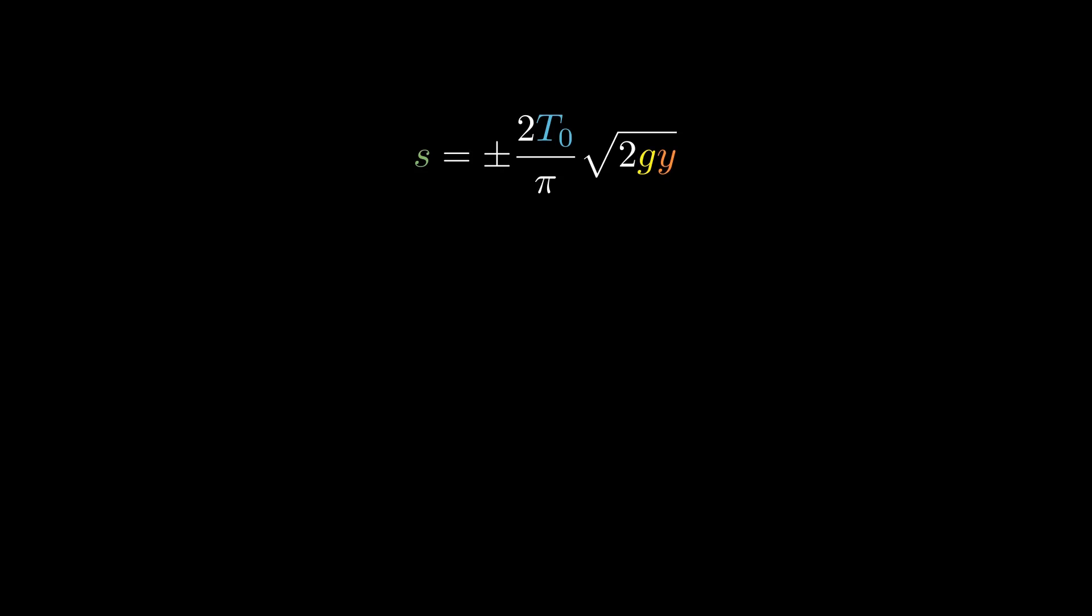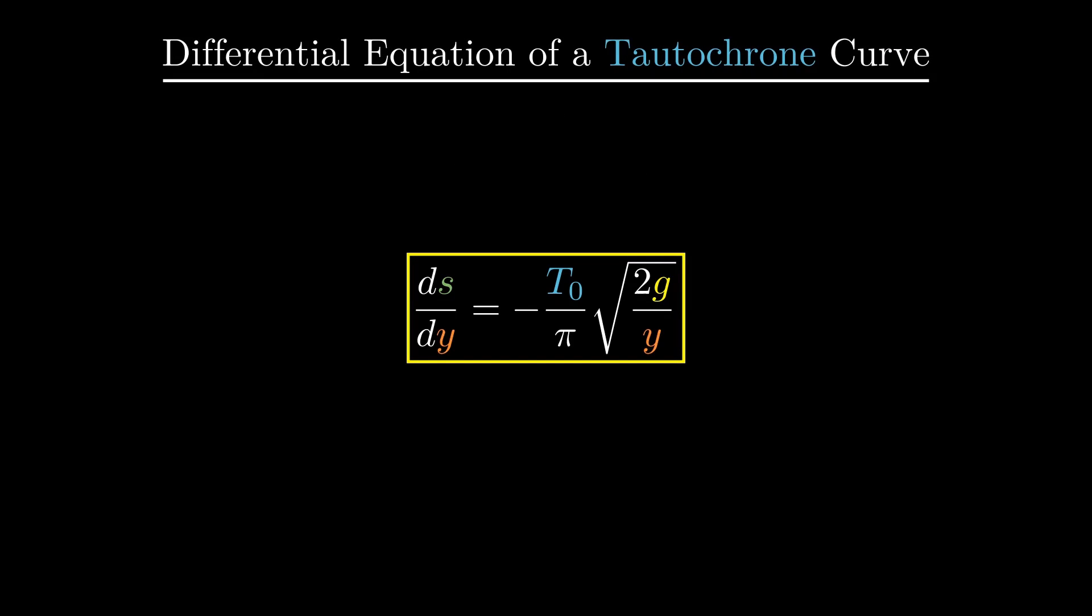But having an explicit expression for arc length makes this a little tricky to use. So we differentiate this equation and choose a negative sign to be consistent with the fact that the arc length to be traversed reduces as we get closer to the lowest point of the curve. This is the key equation that enables us to solve for a tautochrone curve in any coordinate system.